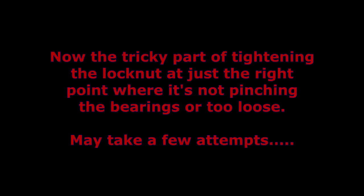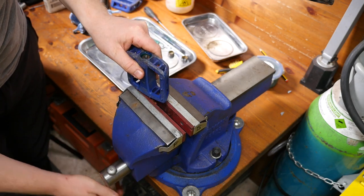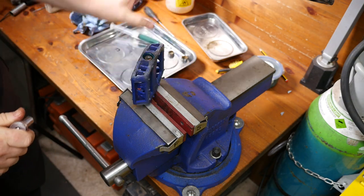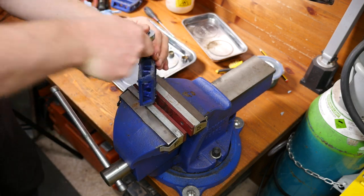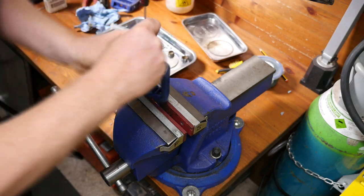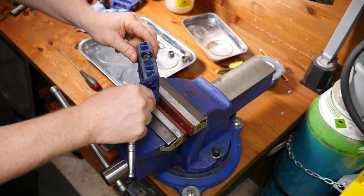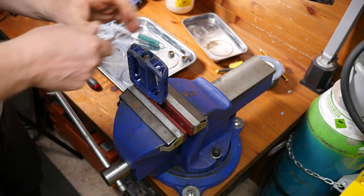Now the tricky part of tightening the lock nut at just the right point where it's not pinching the bearings or too loose. This may take a few attempts. So if we return the pedal back to the vise and clamp it on the flats of the pedal, that holds it tight. Now as we tighten this lock nut, what it tends to do is tighten the cone as well, which then means the pedal gaunches because the bearings are being crushed. So then you've got to very carefully undo the lock nut and also undo the cone a bit as well, and then re-tighten the lock nut, and keep doing this until you get to a point where it's just right. See at the moment there's too much play in that.